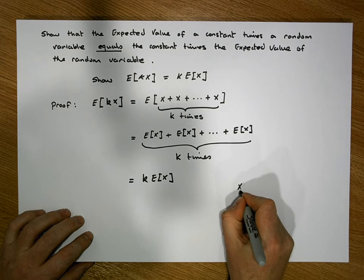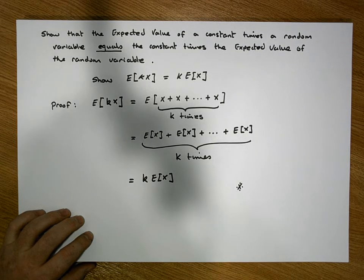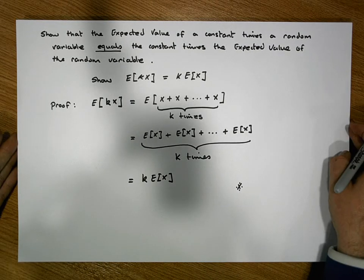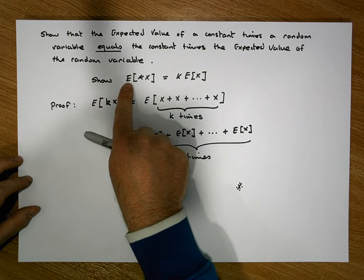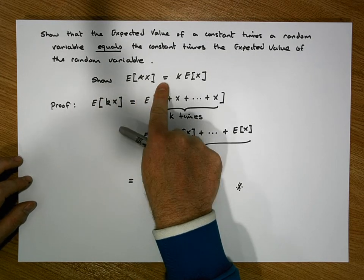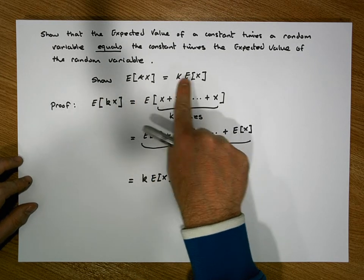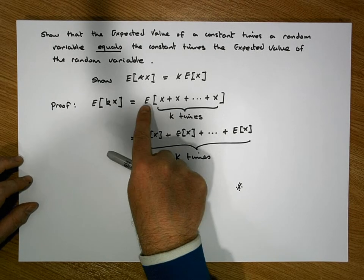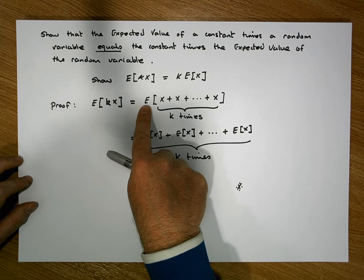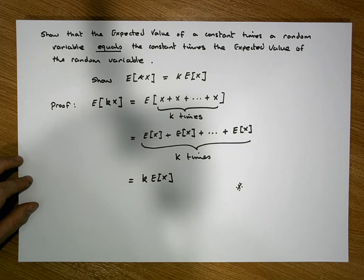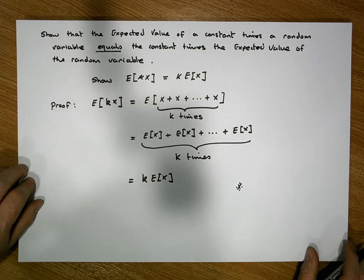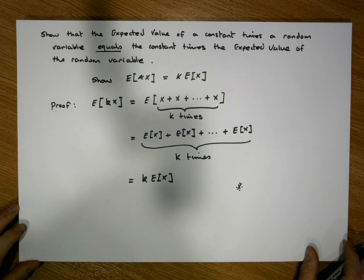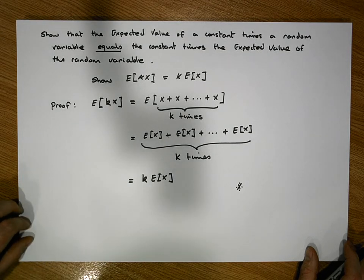Okay guys, I know this was a very quick video, but that's actually how straightforward it is to show that the expected value of a constant times a random variable is the same as the constant times the expected value of the random variable. We're relying upon independence in relation to distributing the expected value across the summation. This was Jonathan Lambert with the Mathematics Development and Support Service at the National College of Ireland, and I hope this video was somewhat helpful.